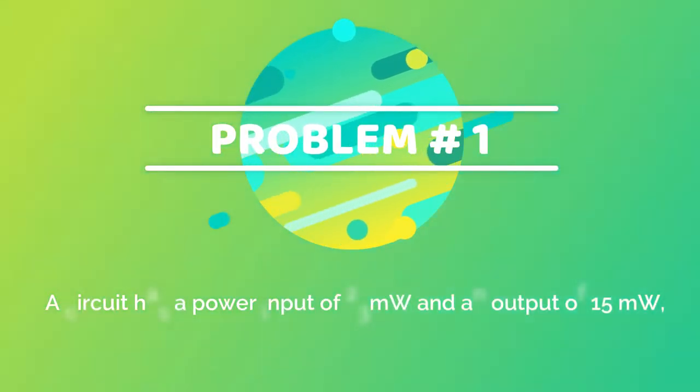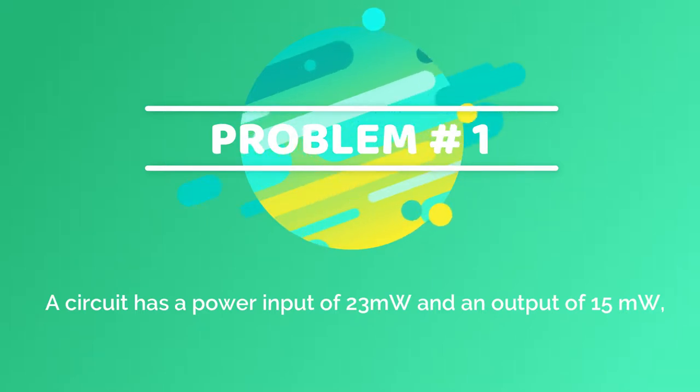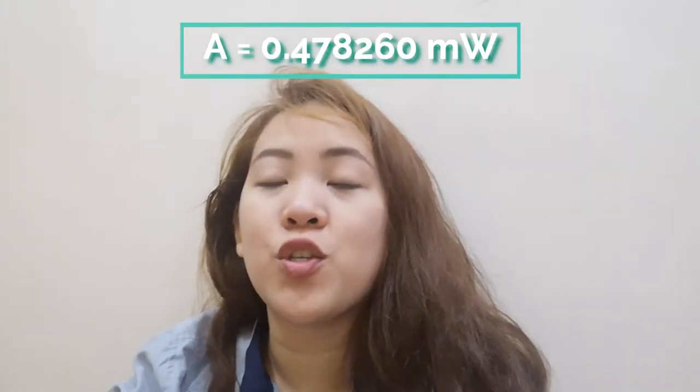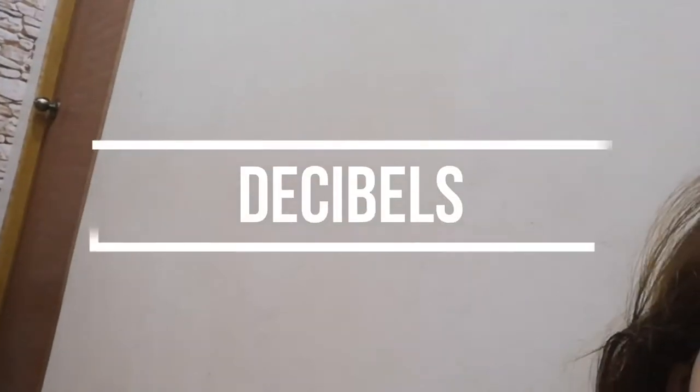Here's an example problem for gain or attenuation: a circuit has a power input of 23 milliwatts and an output of 15 milliwatts. So A is equal to 15 over 23, which gives us 0.478260. But now we have to convert it into decibels.